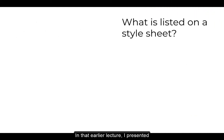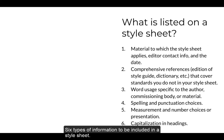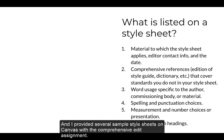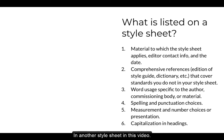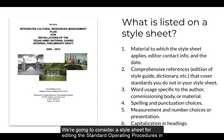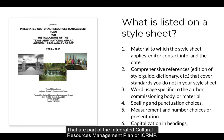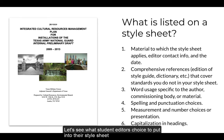In that earlier lecture, I presented six typical types of information included in a style sheet, and I provided several sample style sheets on Canvas with the comprehensive edit assignment. But I want to briefly lead you through the editor's choices in another style sheet in this video. We're going to consider a style sheet for editing the standard operating procedures that are part of the Integrated Cultural Resources Management Plan, or ICRMP. You used some of that material in the Editing with Word tutorial during Module 6. So let's see what a group of student editors chose to put into their style sheet for copy editing this material.